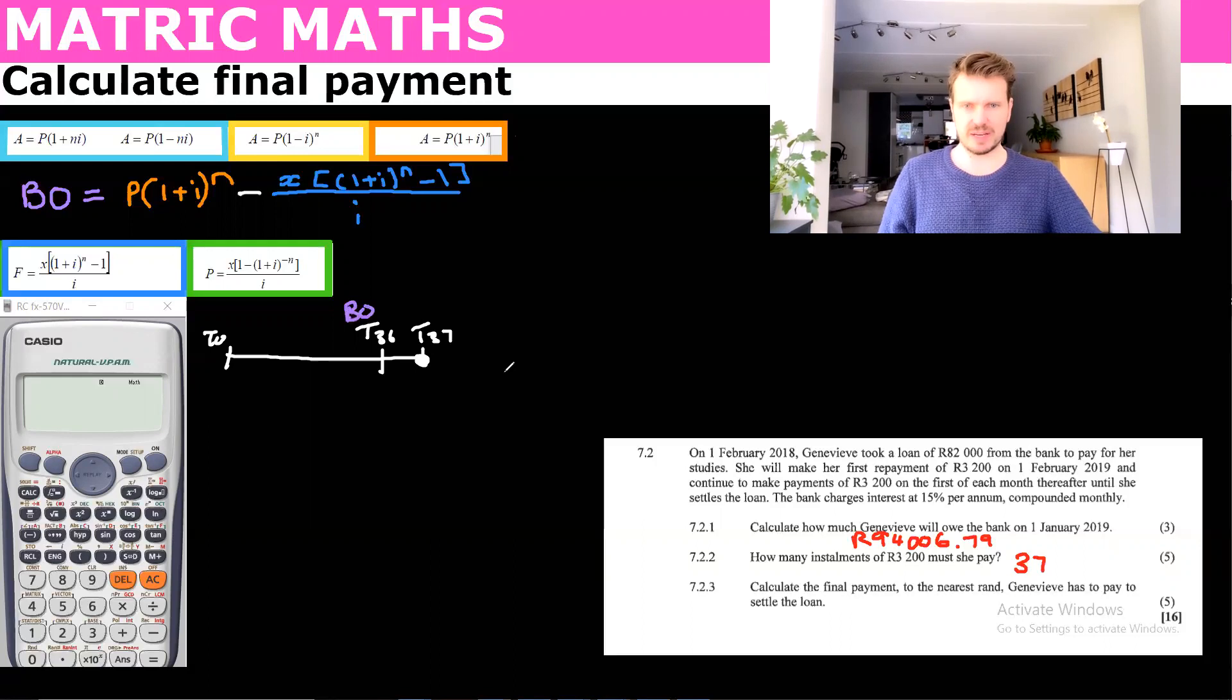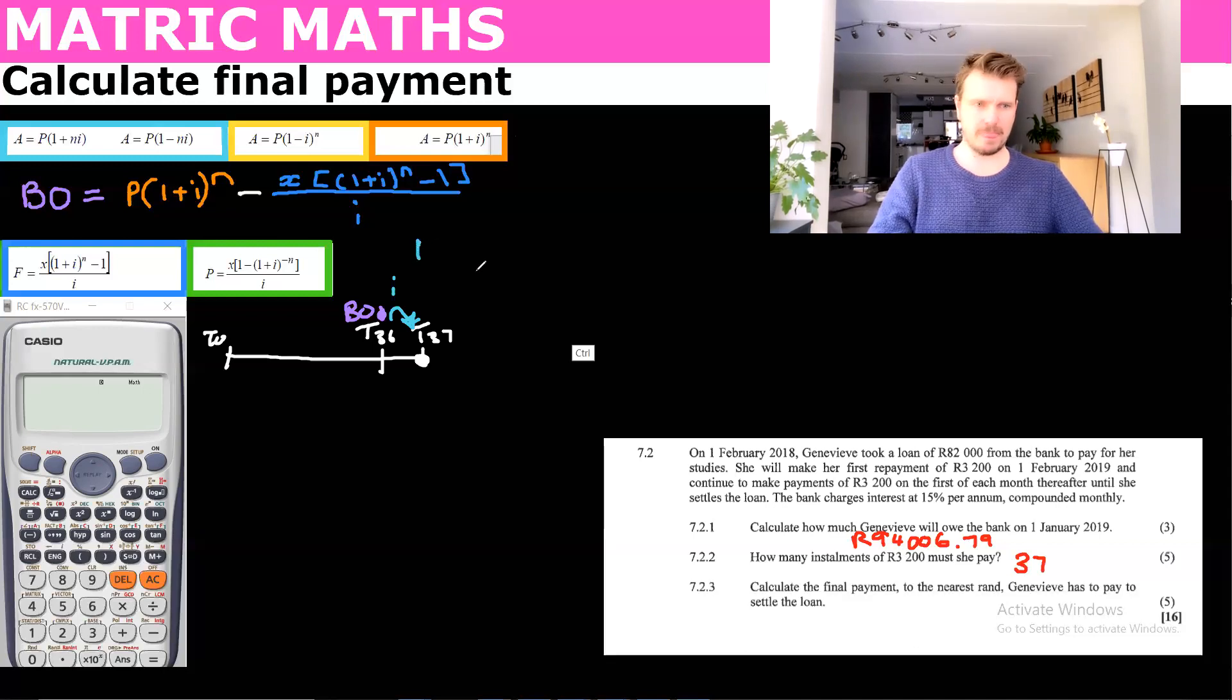So we get the balance outstanding here and then the final payment we're just going to add one month's interest. Okay, to get to there. So just one month times I. So what we could say is we could make this formula a final payments formula.